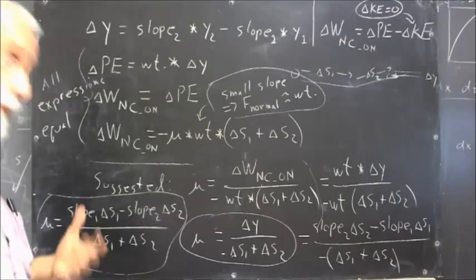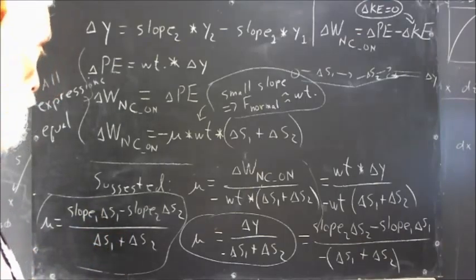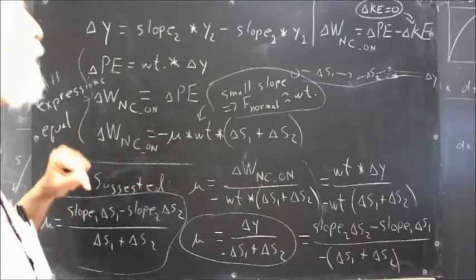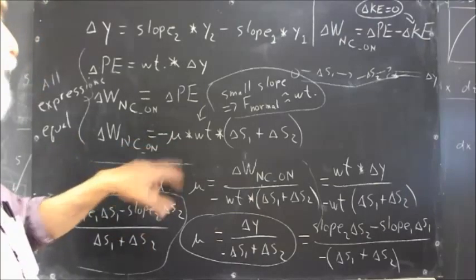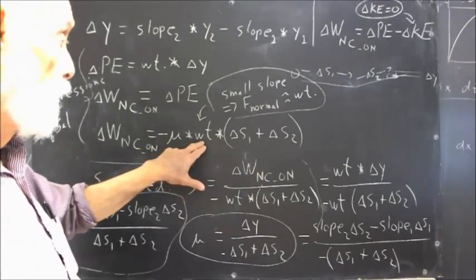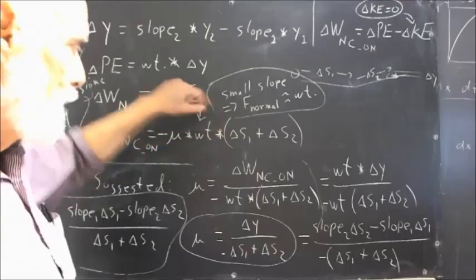That delta WNC_on is what? What's another expression for that? Another expression for that is the work done by the frictional force, because that's the only non-conservative force that's presumably acting here.